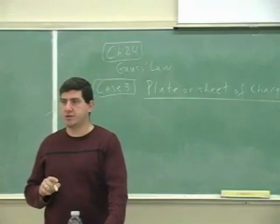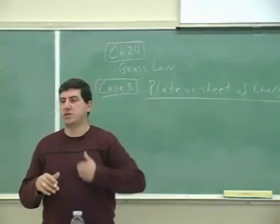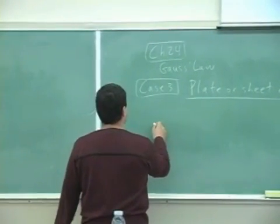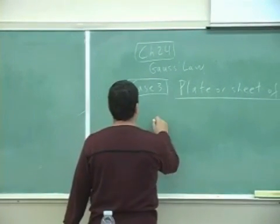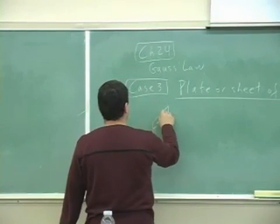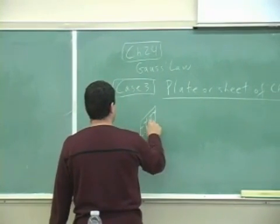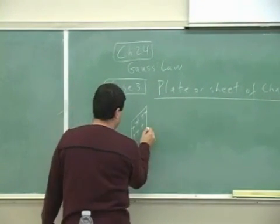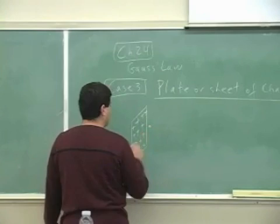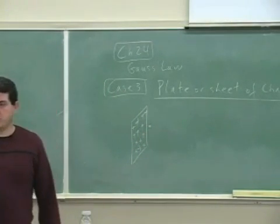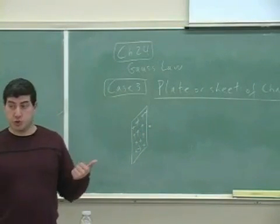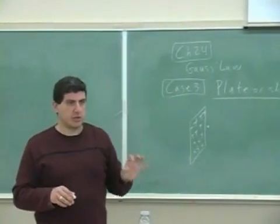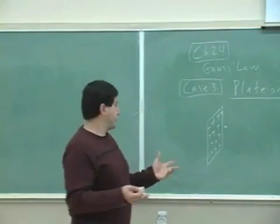The thickness doesn't matter either — we're just right outside of the sheet of charge. So we usually draw something like this, and let's say we want to find the electric field right here. How do we use Gauss's law? Since we are close to the sheet of charge, the electric field is coming out of the sheet of charge perpendicular to the surface.